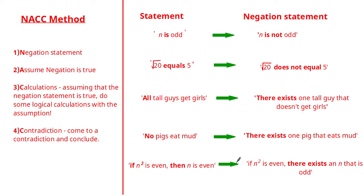For the last example: 'if n squared is even then n is even' — the negation is 'if n squared is even then there exists an n that is odd.' To summarize the keyword rules: 'if...then' goes to 'then there exists'; 'none' goes to 'there exists'; 'all' goes to 'there exists.' Do try practicing this with examples in your textbook.